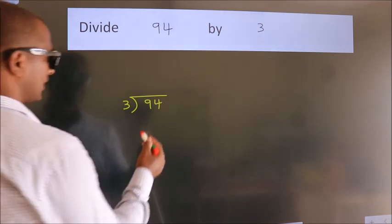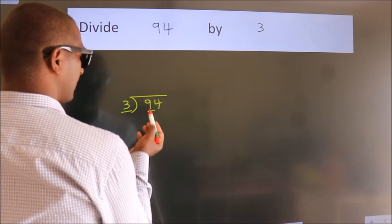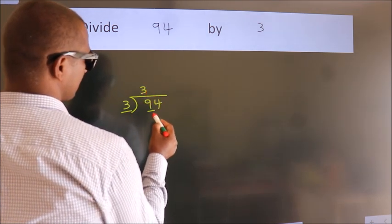Next. Here we have 9, here 3. When do we get 9? In 3 table. 3 times 3 is 9.